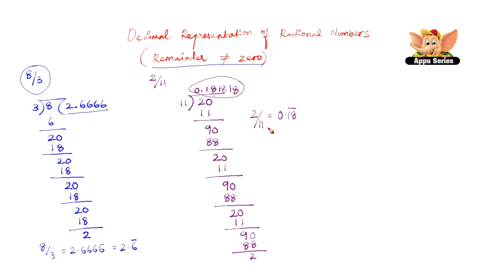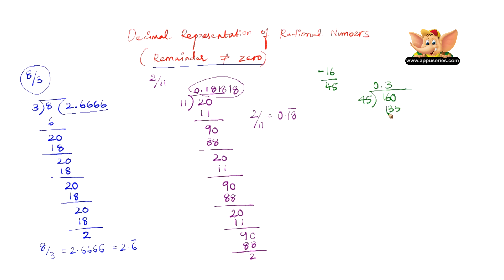Let us solve another problem: find the decimal representation of minus 16 by 45. All we have to do is divide 16 by 45. 16 is not divisible by 45 straight away, so we need to add a 0 and keep a decimal point. 45 times 3 gives 135.